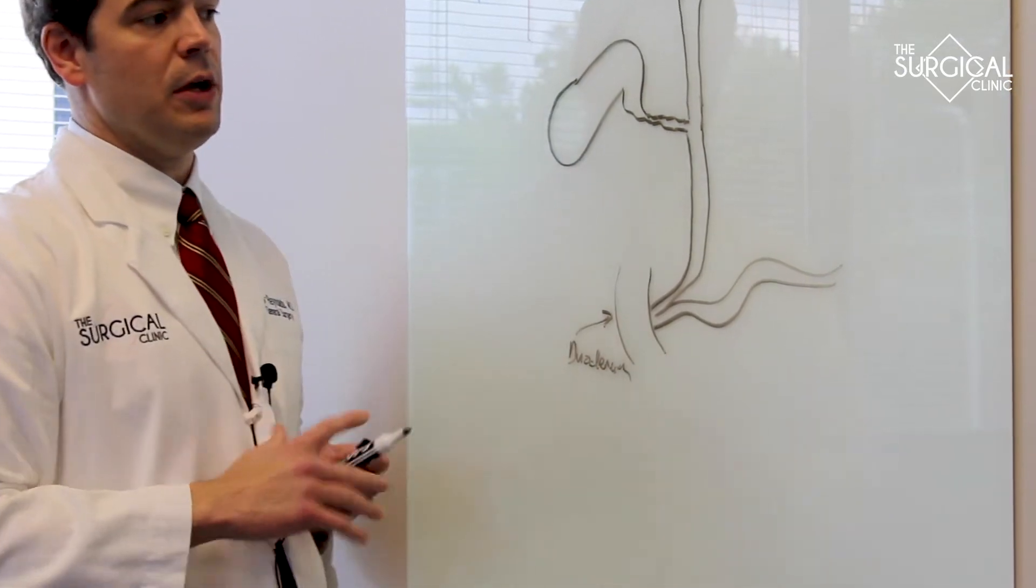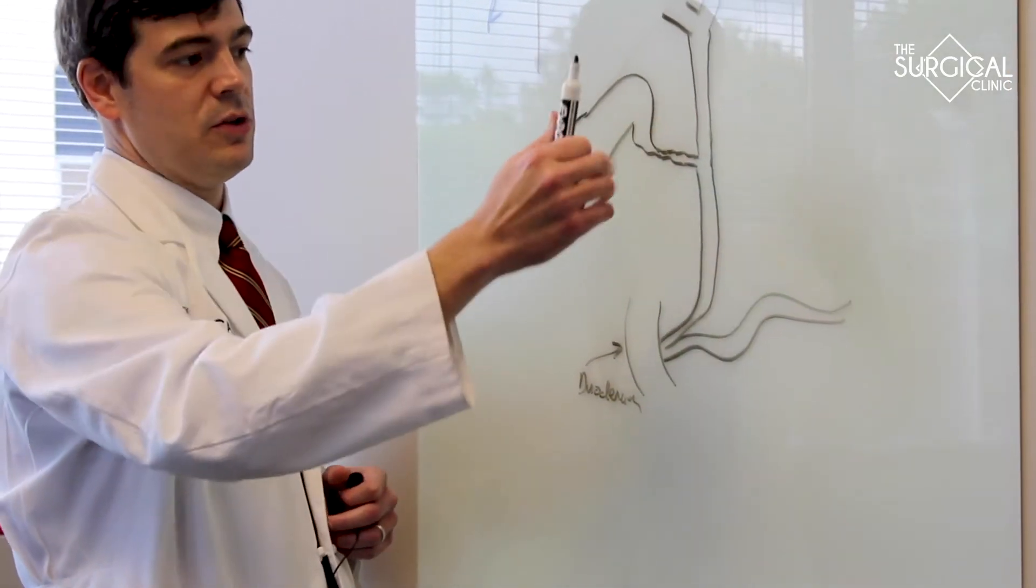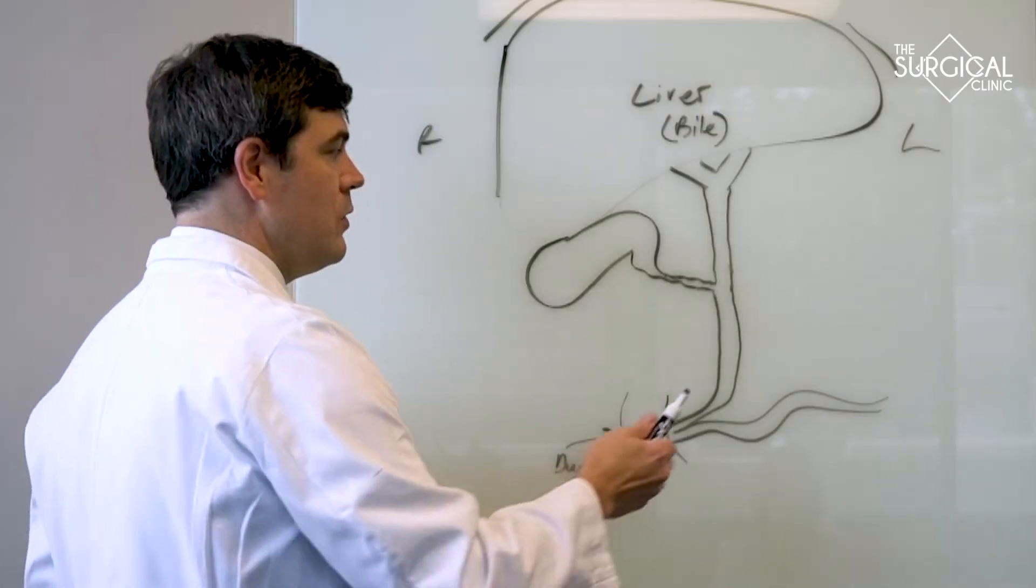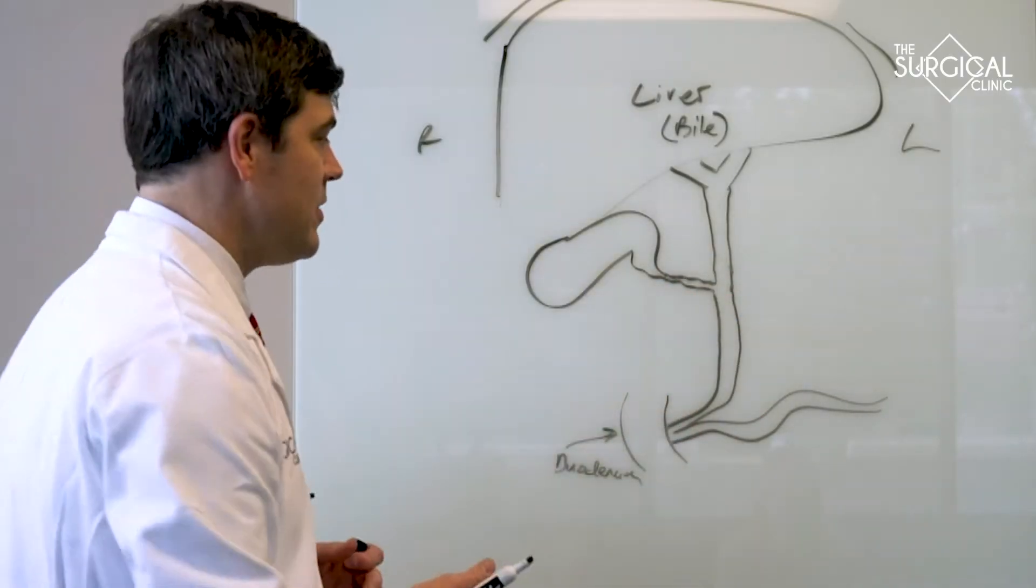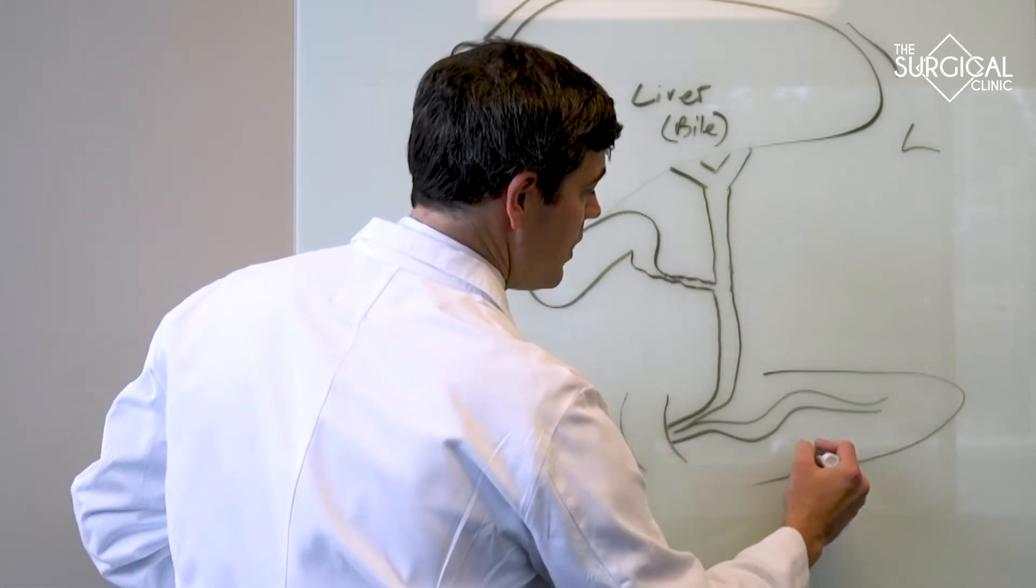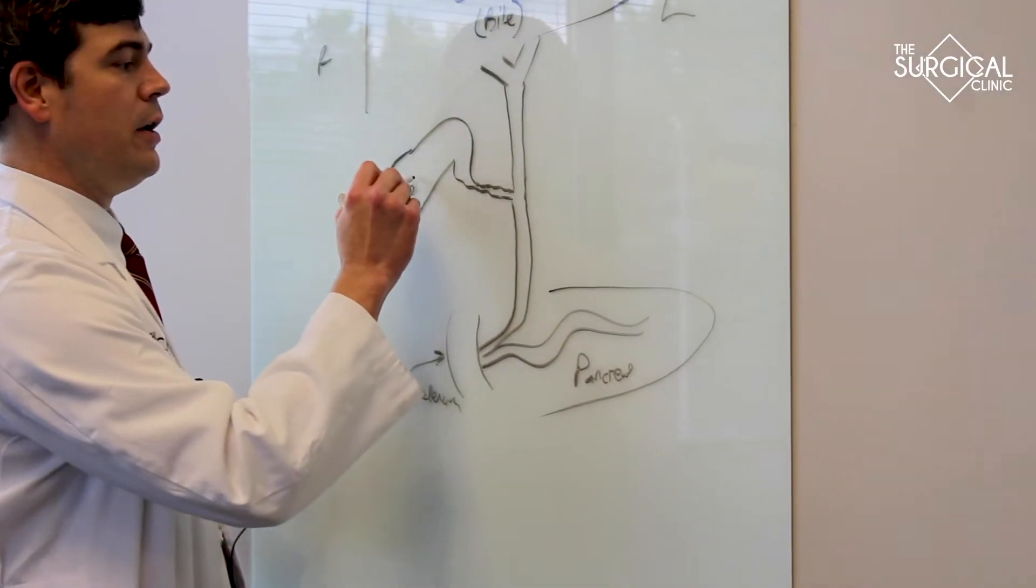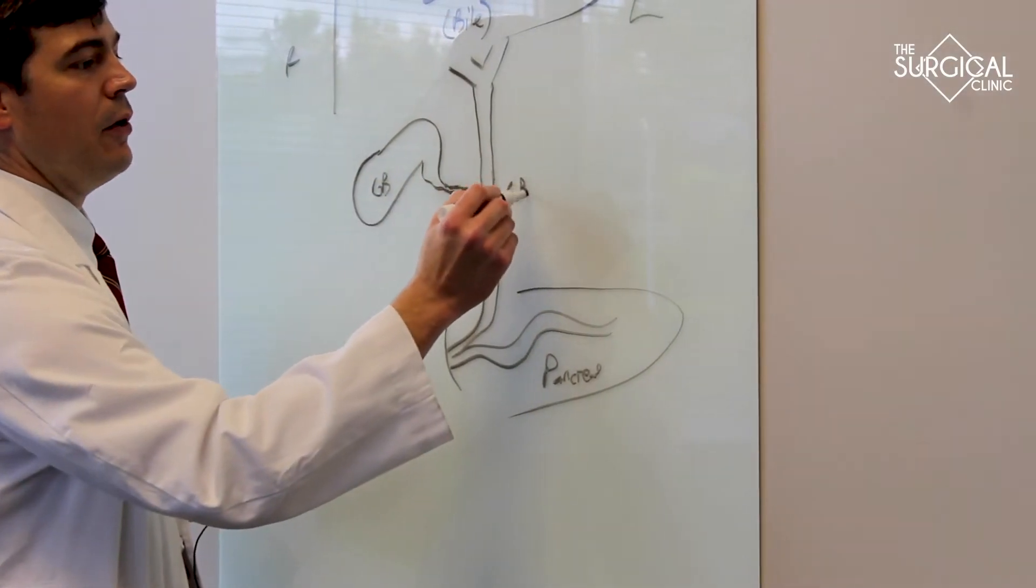I haven't drawn your stomach but your stomach sits on top of this and you eat and food goes down and dumps into your stomach and then your stomach churns up your food with a bunch of acid and dumps it into the first part of the small intestine. So we have the pancreas here, we have the gallbladder here, and we have the common bile duct here.